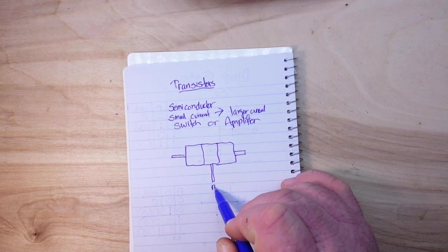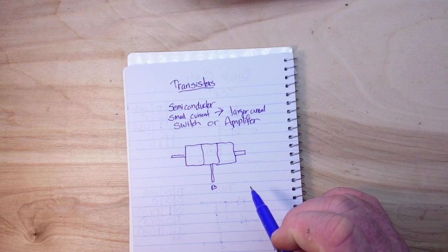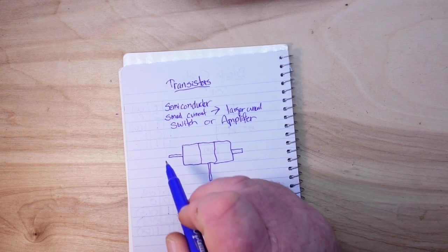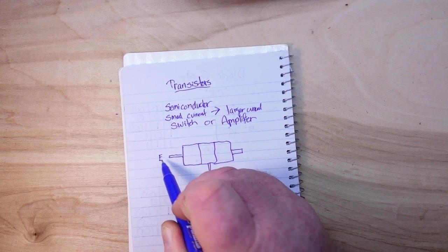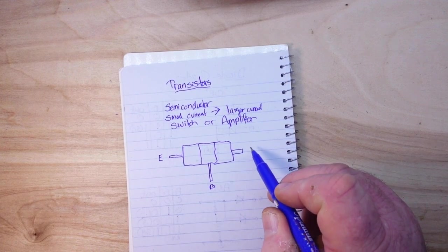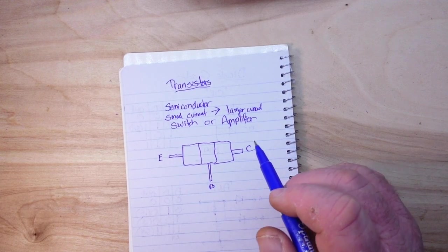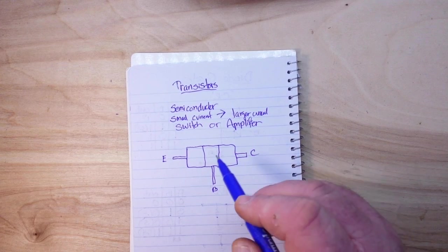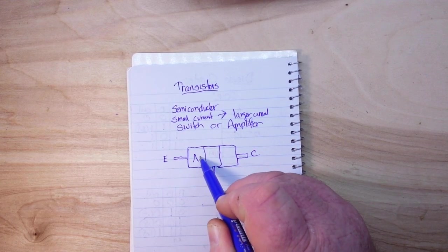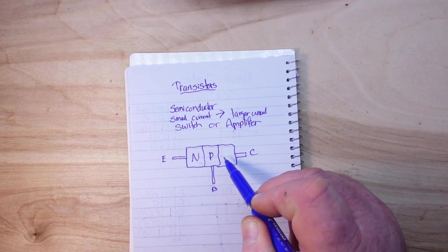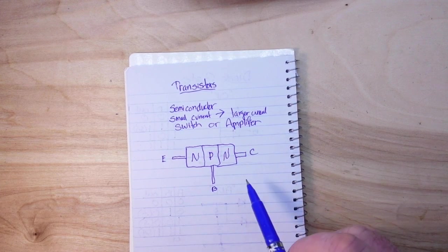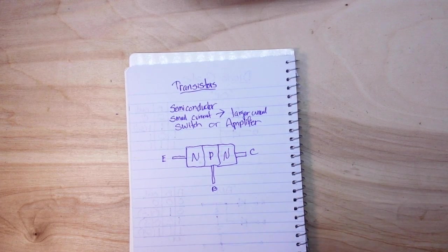So if this is the base of our transistor, this is the emitter and this is the collector. And if this is an NPN transistor, then what do you see?